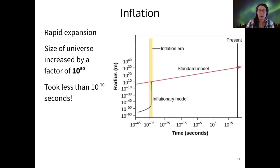In order to solve these problems, the inflation model was proposed. Basically what the inflation model says is that in a very small time, at the very beginning of the quark epoch, the universe undergoes a period of rapid expansion. It expands by a factor of 10 to the 50th over a timescale that took less than 10 to the minus 10 seconds. This is much less than the blink of an eye.